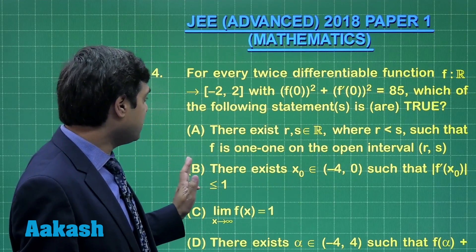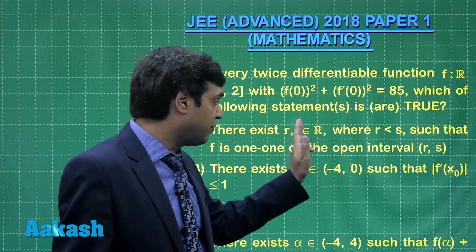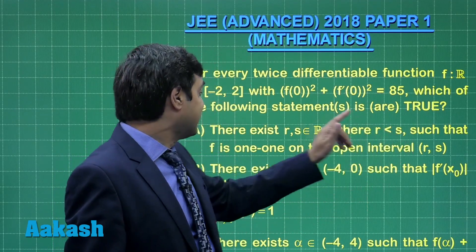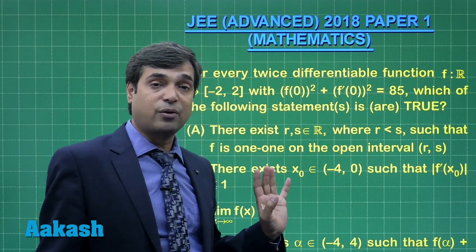Four options are given. First one says there exist r, s from set of real numbers where r is less than s, such that f is one-one on the open interval (r, s).